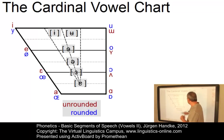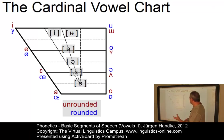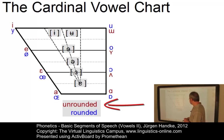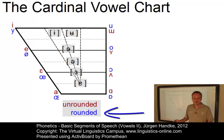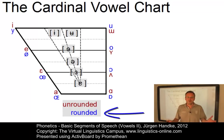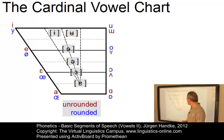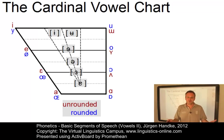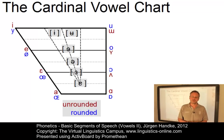Here we have indicated lip rounding by means of different colours. The vowels produced with unrounded lips are represented in red, the blue ones are produced with a rounded lip position, and the central ones are represented in black because they involve some sort of neutral lip position. Let us look at some examples.